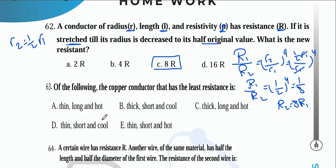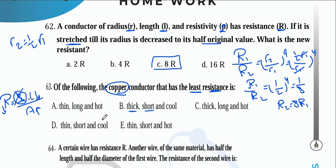For least resistance among copper conductors: R = ρL/A. For minimum R we need minimum L and maximum A, i.e., a short thick wire. Also, lower temperature reduces resistance, so choose the cool short thick wire.